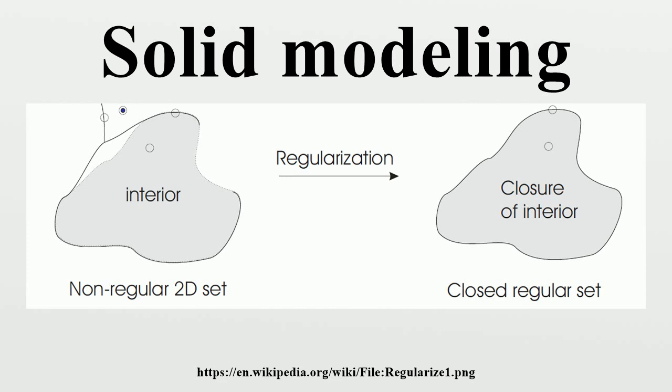The notion of solid modeling as practiced today relies on the specific need for informational completeness in mechanical geometric modeling systems, in the sense that any computer model should support all geometric queries that may be asked of its corresponding physical object. The requirement implicitly recognizes the possibility of several computer representations of the same physical object as long as any two such representations are consistent.